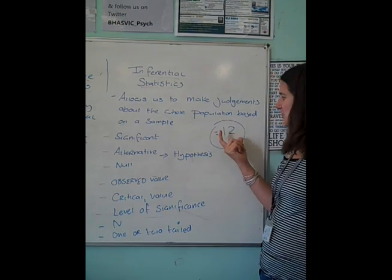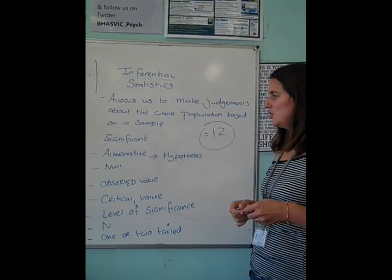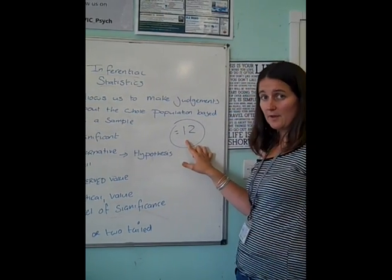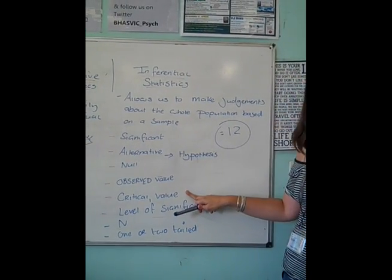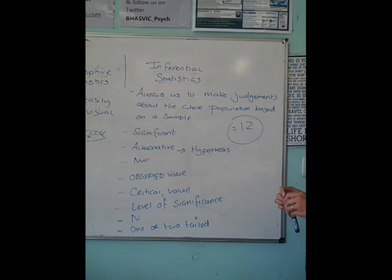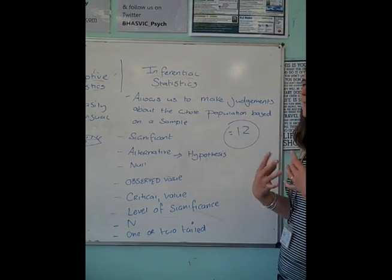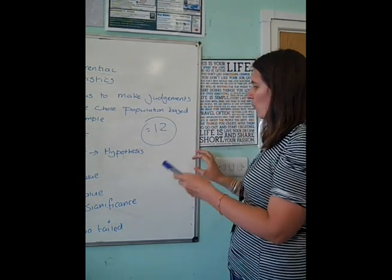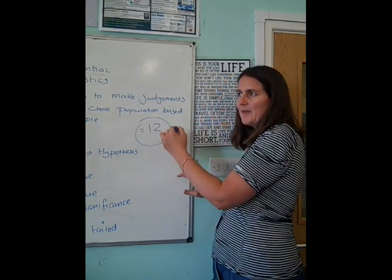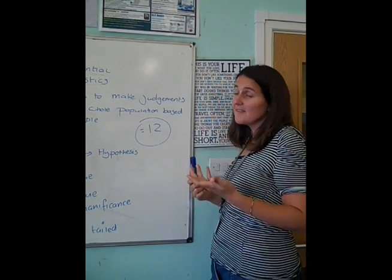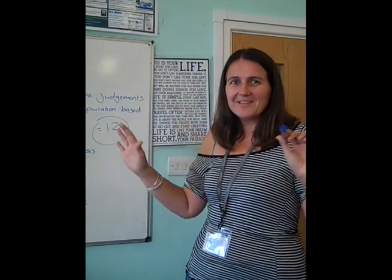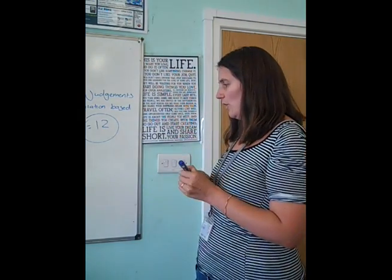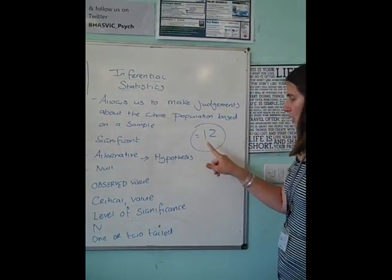What do you do with that answer? How do you know from, say, 12 whether your energy drink has made you talk more? What we do is compare it against another number, and that number is called your critical value. A critical value is worked out by people who really like maths — they go away and work out for each of the stats tests what number your observed value has to be more than or less than for your results to work. All you need to know is how to find your critical value and what it's for.